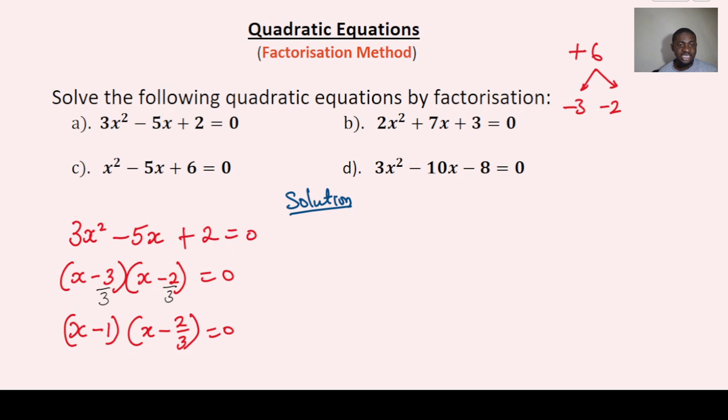Then set each of these to be equal to 0, that becomes x - 1 = 0, x - 1 = 0, or x - 2/3 = 0.